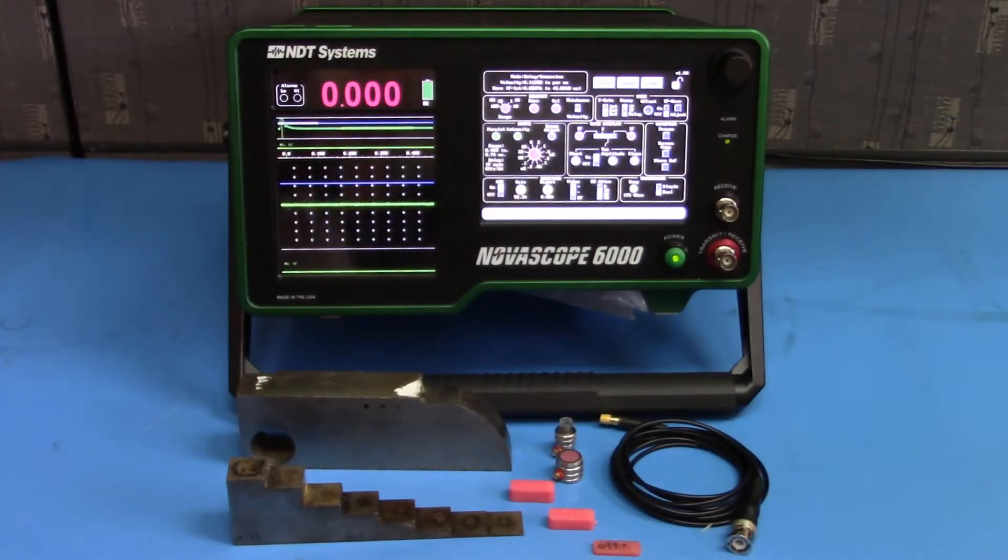Welcome to the NDT System's Precision Thickness Gauge Setup video. We will cover how to set up the Novoscope 6000 for use with contact and delay line style transducers.